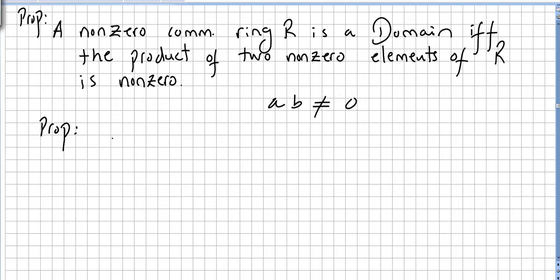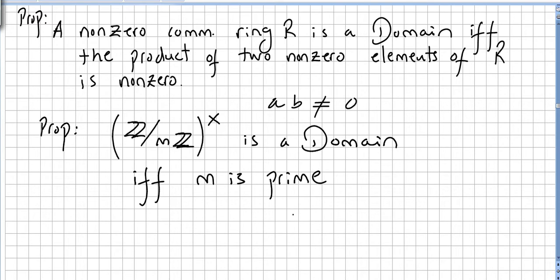I'm not going to prove this one, but this one is very important. The commutative ring, the integers modulo M, the commutative ring of the integers modulo M, if and only if M is prime.